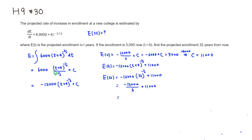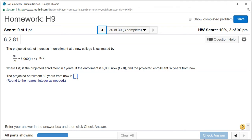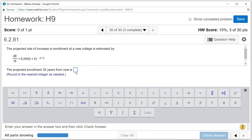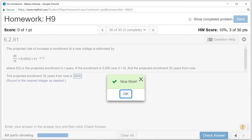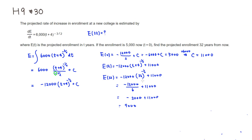So negative 12,000 times 1 over 6 is negative 2,000, and plus 11,000, that's going to be 9,000. So the projected enrollment after 32 years would be 9,000. Let's type it in — the answer is 9,000. Let's check the answer. Got that. I hope that this was clear.